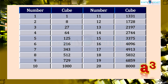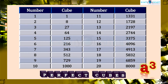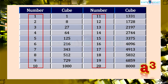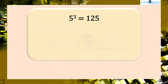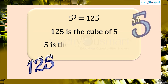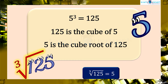We know that these numbers are the cubes of natural numbers — they are called perfect cubes. In 5 cubed equals 125, we can say that 125 is the cube of 5 and 5 is the cube root of 125. We can represent this symbolically as: the cube root of 125 equals 5.